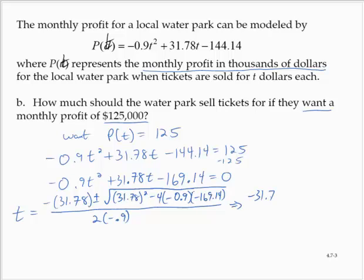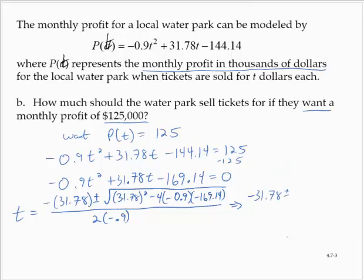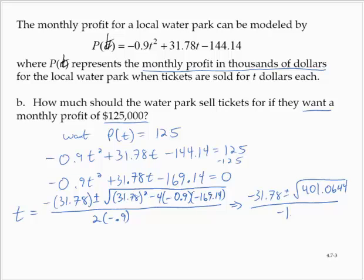So we'd have -31.78 ± ... Let's bring up our calculator and calculate under that radical. We'd have 31.78² - 4(-0.9)(-169.14). So that's 401.0644, and that's all divided by -1.8.